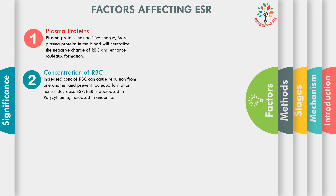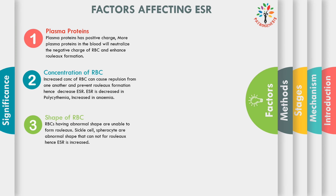In polycythemia, there is decreased ESR, while in iron deficiency anemia, we can see increased ESR because of lower concentration of RBCs. Concentration of RBCs is higher in males than females; as a result, males have lower ESR than females. Third, shape of RBCs: RBCs having abnormal shape are unable to form rouleaux. For example, sickle cells and spherocytes are abnormal-shaped RBCs that cannot form rouleaux, resulting in decreased ESR values.